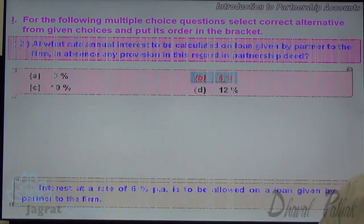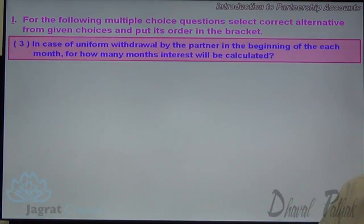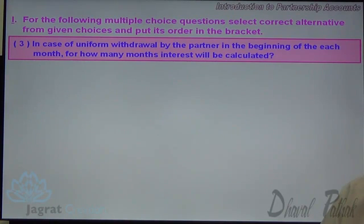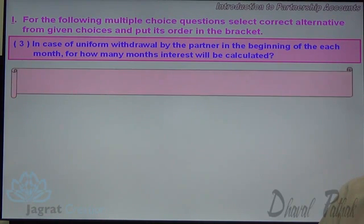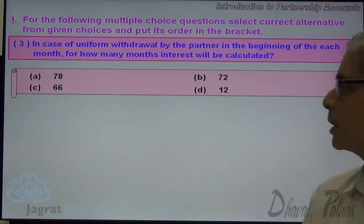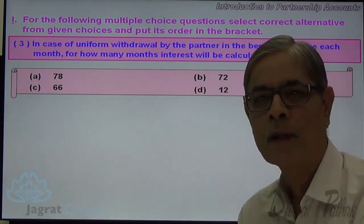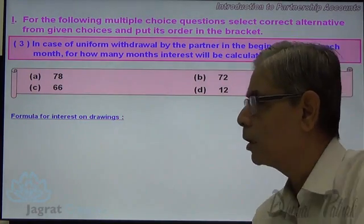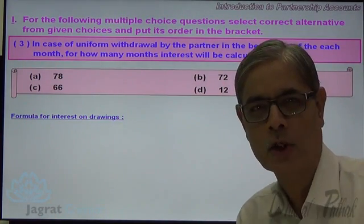Next. In case of uniform withdrawal by a partner at the beginning of each month, for how many months will interest be calculated? The options are 78, 72, 66, and 12.